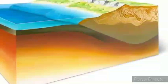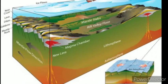Number 3: Crust. The crust is the outermost and thinnest zone of solid material. It consists of continental crust, which underlies the continents, and oceanic crust, which underlies the ocean basin.